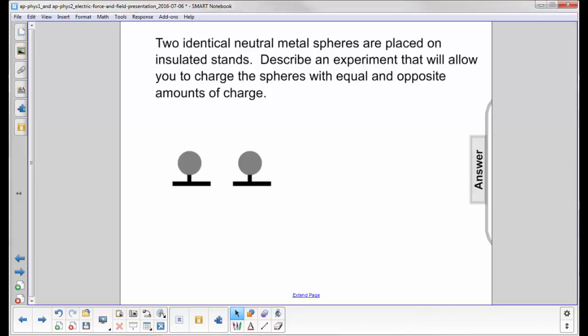Two identical neutral metal spheres are placed on insulated stands. Describe an experiment that will allow you to charge the spheres with equal and opposite amounts of charge.